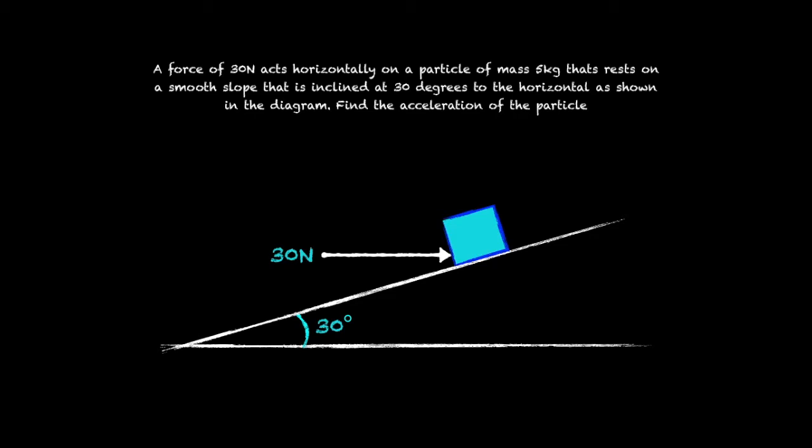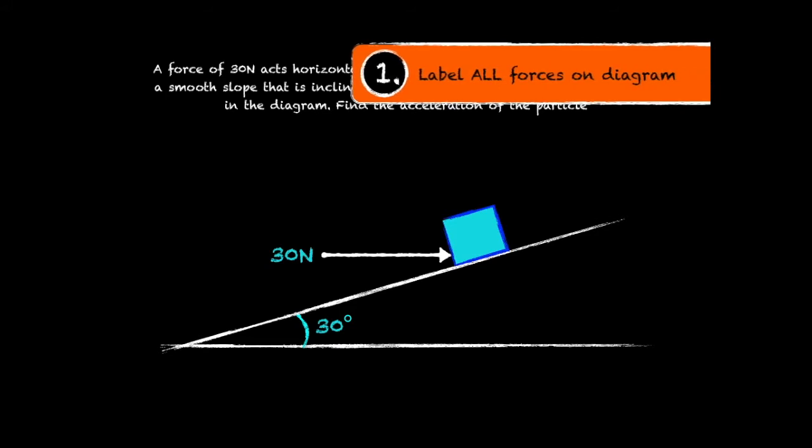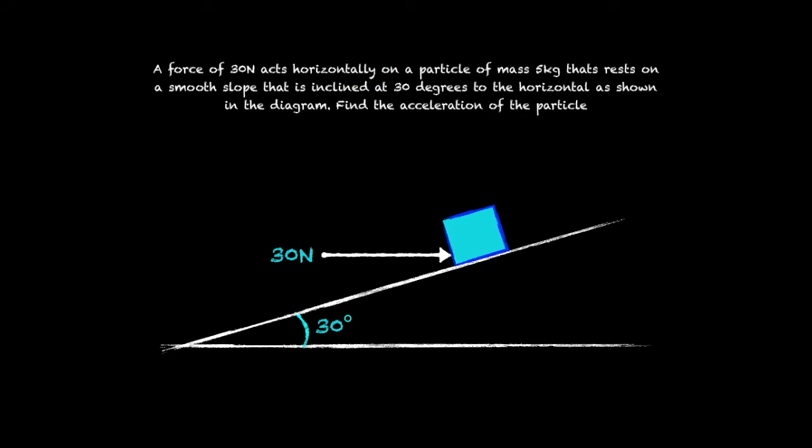So we've got to start by drawing all the forces on the diagram. And we know the mass of our object is 5 kilograms and so its weight is 5g.